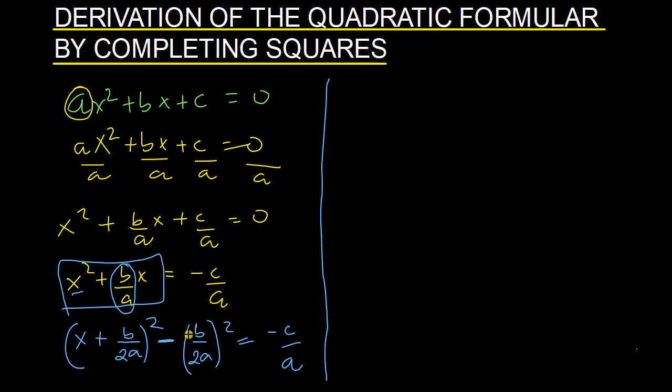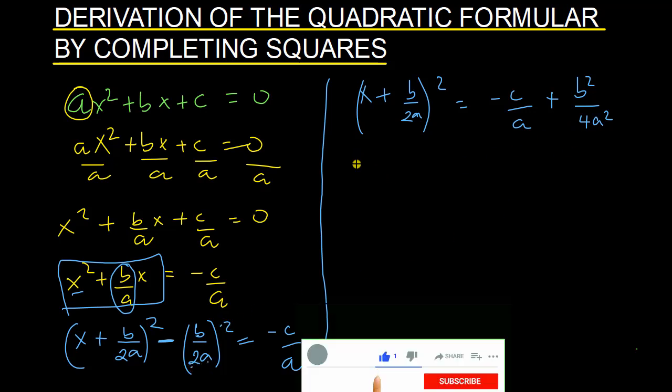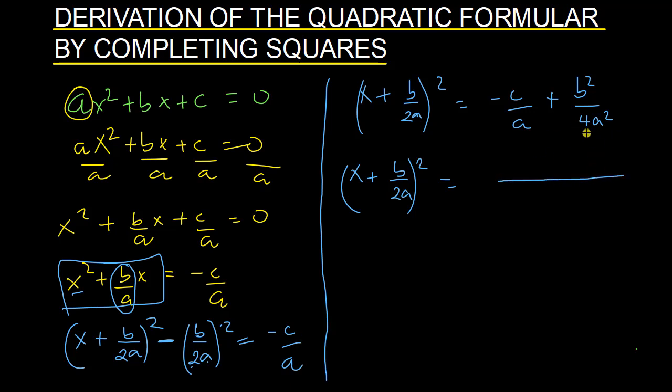I can now carry this forward to the right hand side. So I have (x + b/2a)² = -c/a + b²/4a². The lowest common multiple for this is 4a². So if I divide 4a² by this, I've got -4ac + b², which gives us (b² - 4ac)/4a².